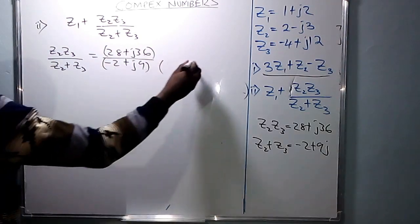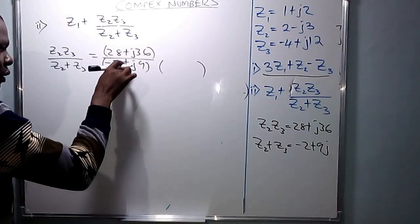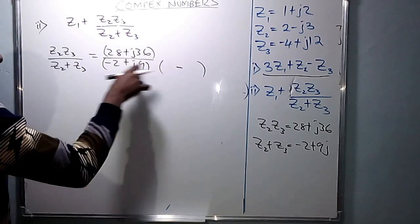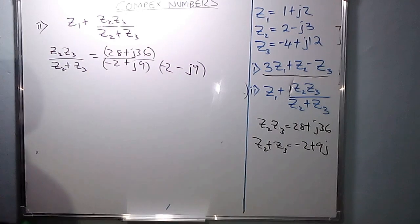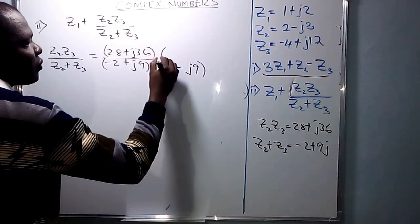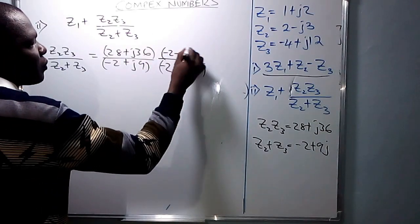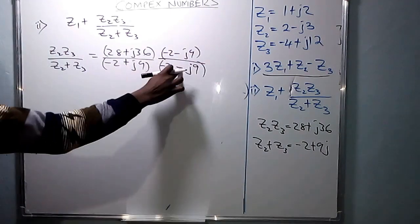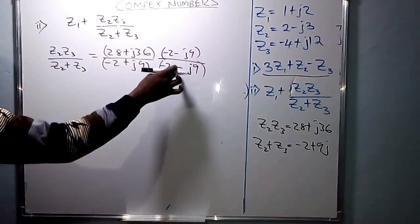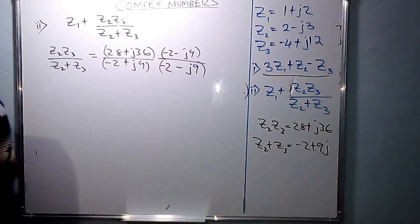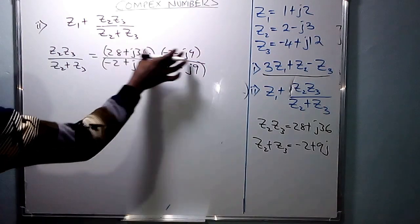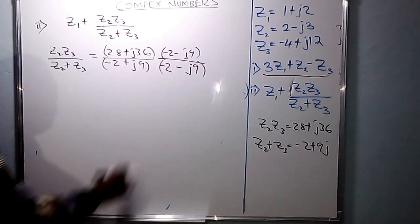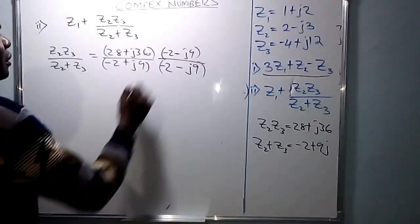The conjugate is found by changing the sign in the middle. The denominator is negative 2 plus j9, so its conjugate is negative 2 minus j9. We multiply both numerator and denominator by this conjugate to balance the equation — it is like multiplying by 1. So in the numerator we now have (28 plus j36) times (negative 2 minus j9).